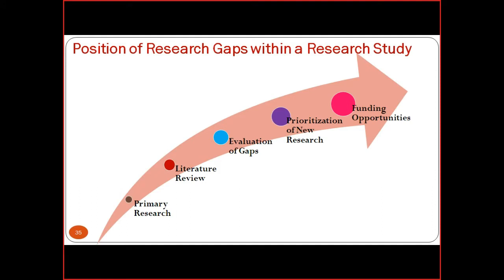The position of the research gap within a research study: first is primary research, second is the literature review, third is evaluation of the gaps, fourth is the prioritization of new research, and the last is funding opportunities. With the help of this, we compile the literature review, perform the analysis, and the last very important aspect is the funding opportunities.